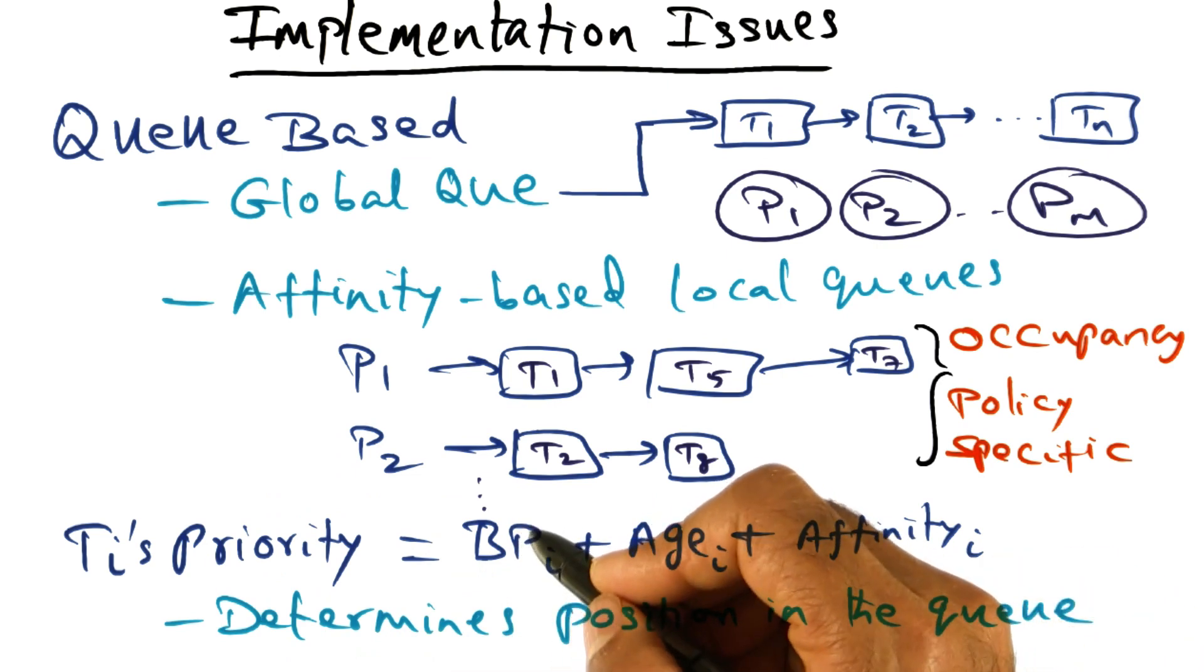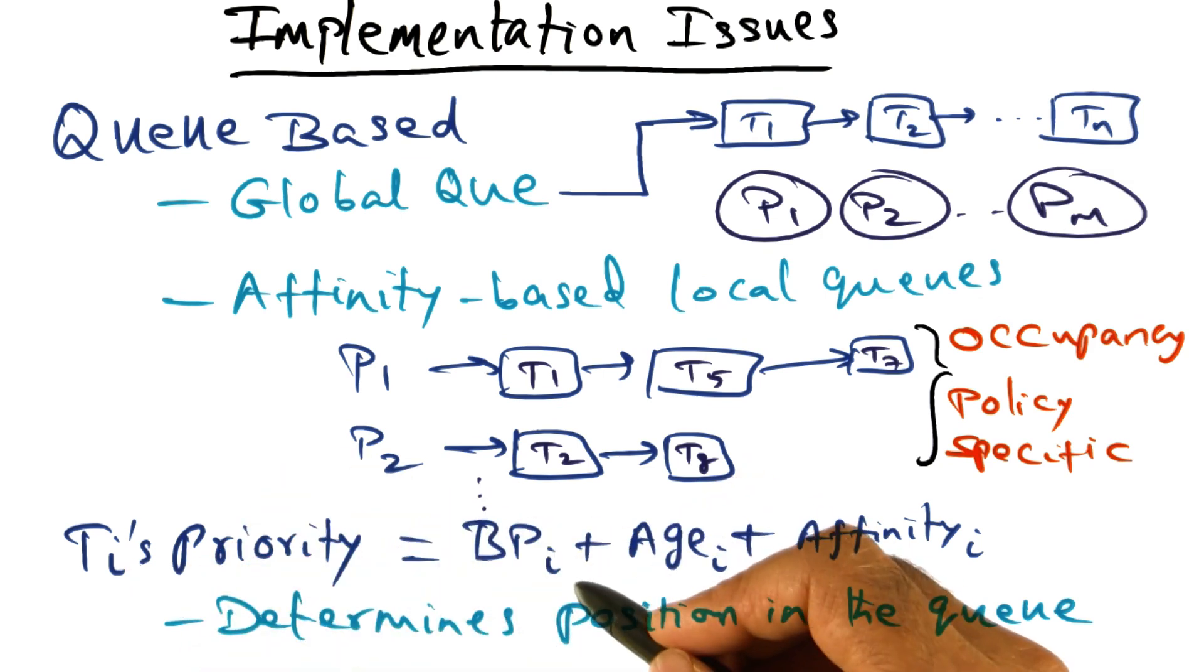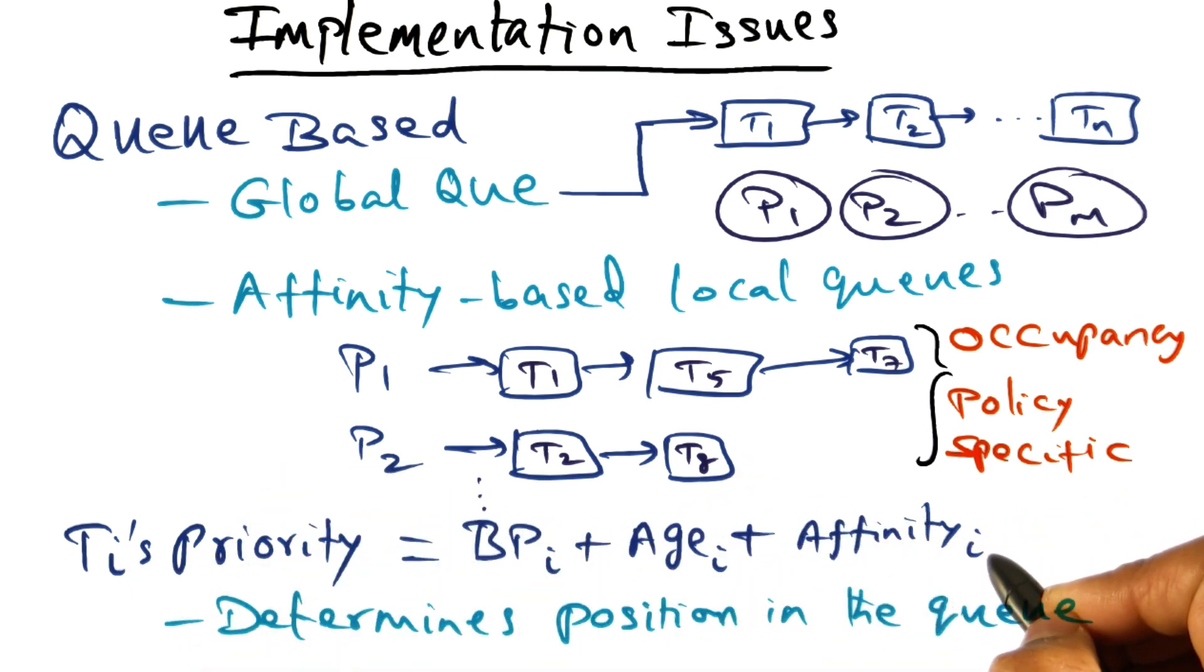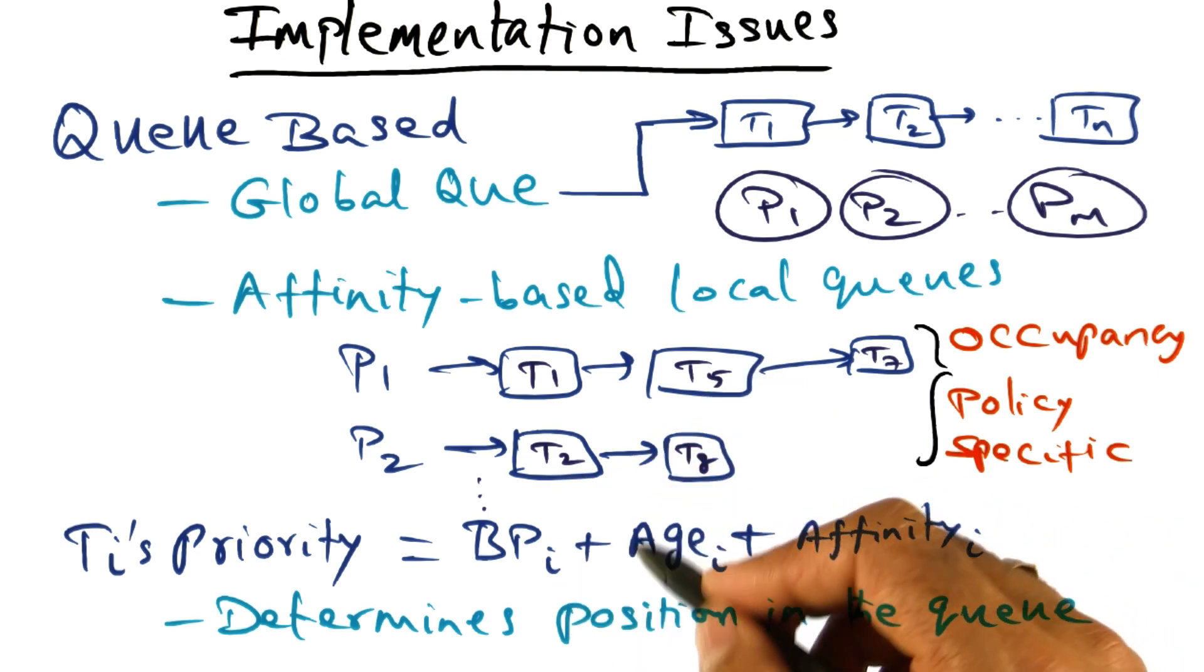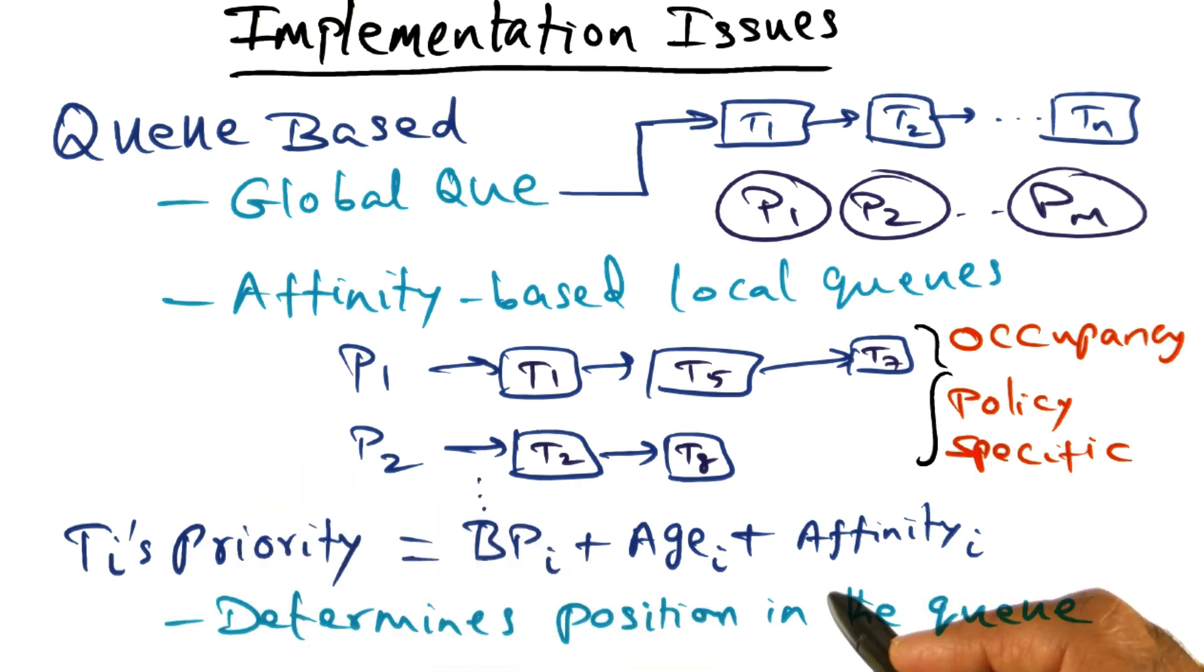And as I said, three attributes that go with it is the base priority that you may associate with a thread when it is first created, the affinity that it has for a particular processor, and also the senior citizen discount that you might give to a particular thread, depending on how long it's been on the system.